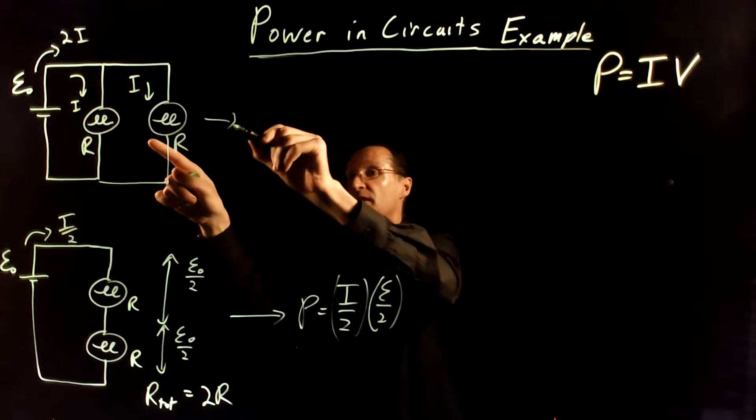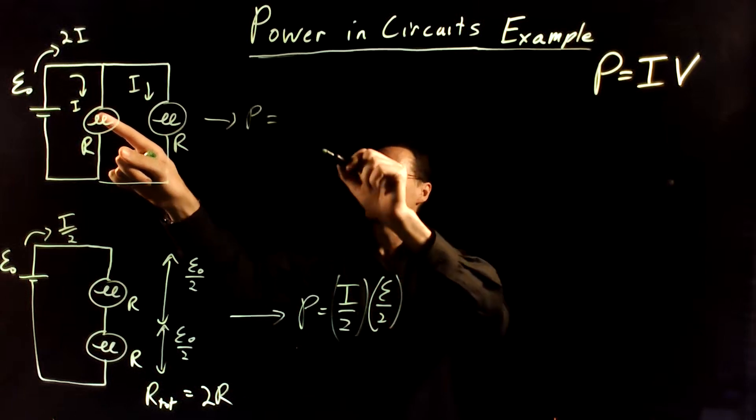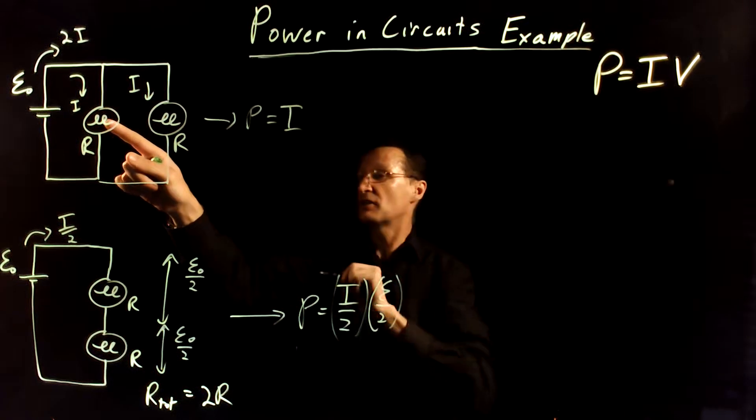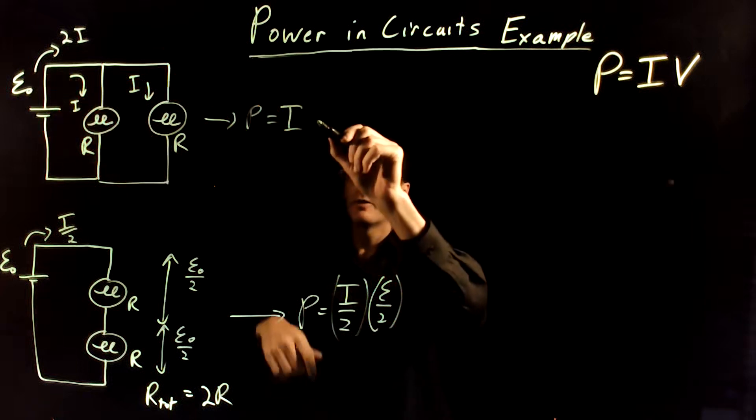Whereas for this one, the power dissipated for just one bulb, for example, that's just going to be the current, which we call I, and then the voltage drop across here is the total of the battery.